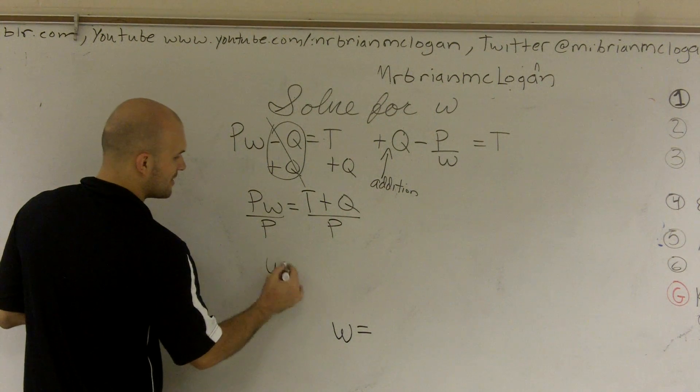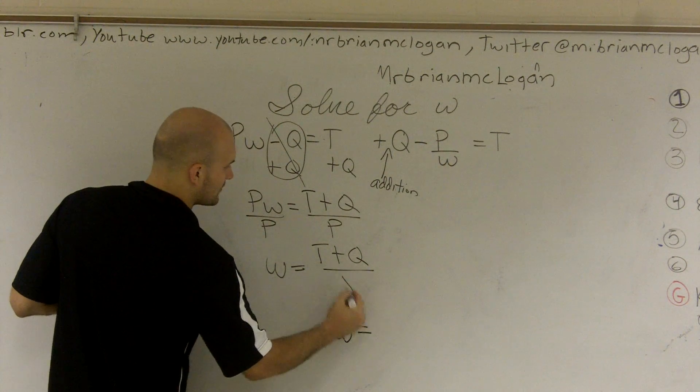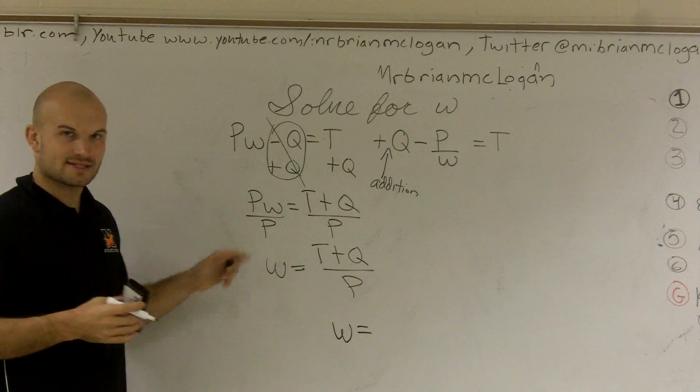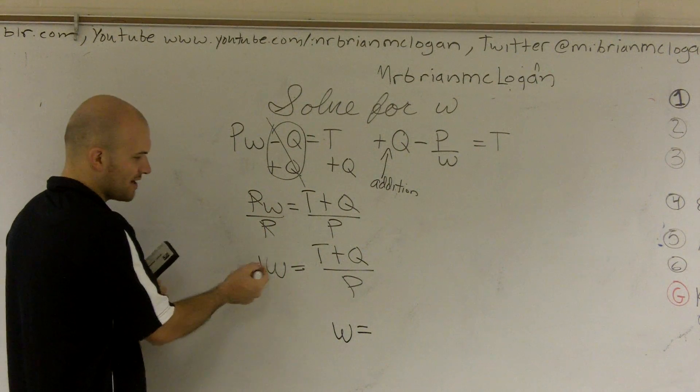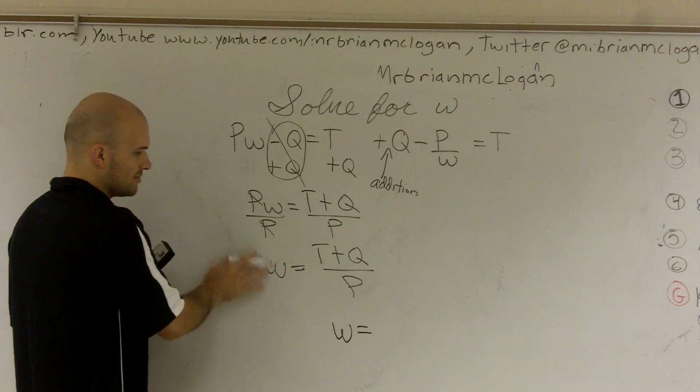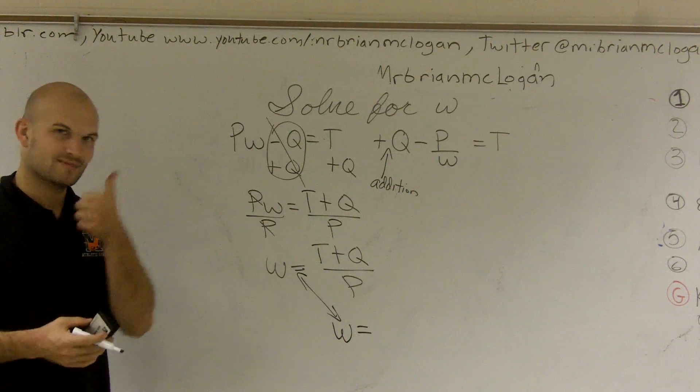So therefore, my final answer is w equals t plus q all over p. And remember, anything divided by itself is going to equal 1. So that's why I have that 1 there. But we don't really write 1 times w. We can just write w. And you notice, is my answer in what w equals? Yes. So we're good.